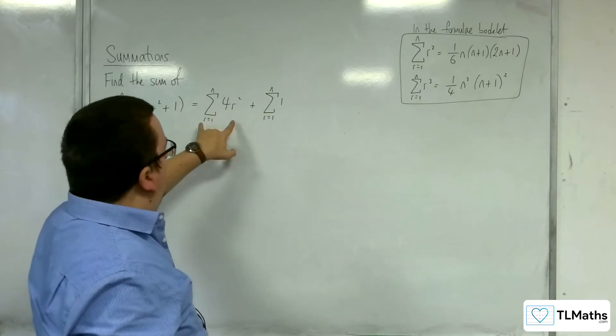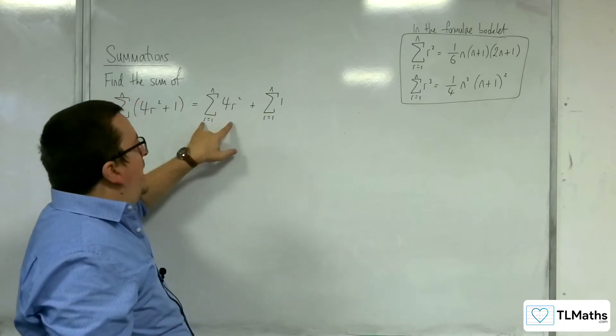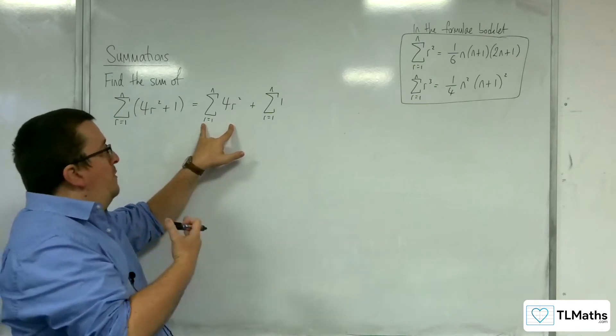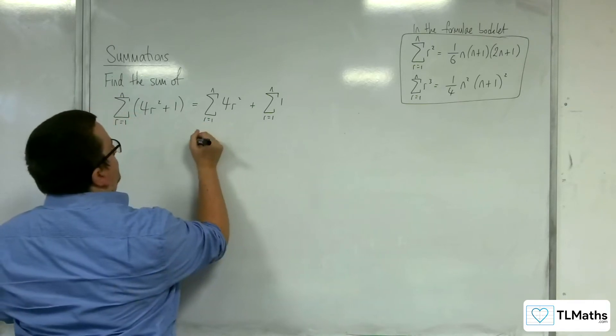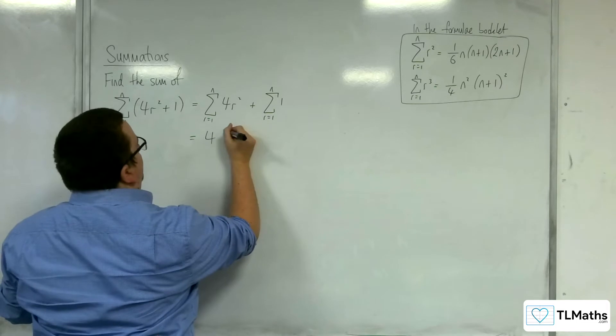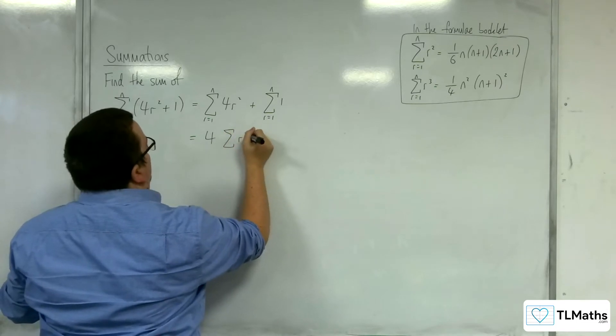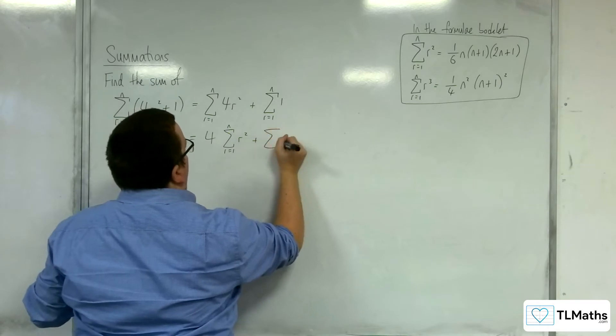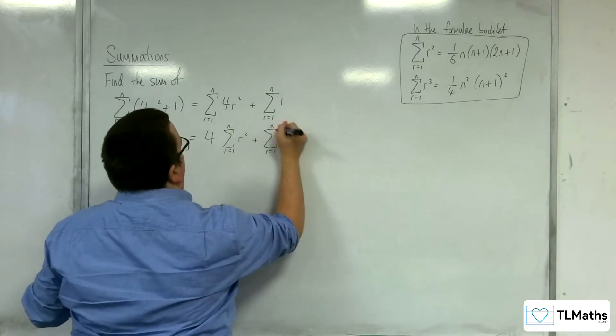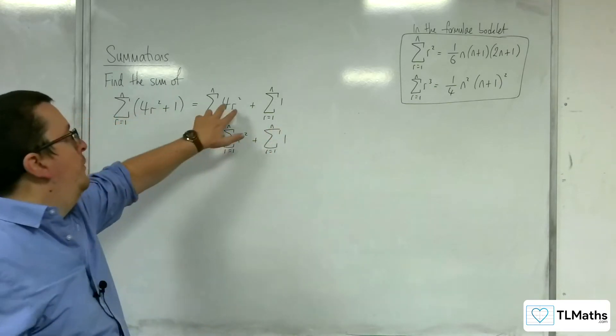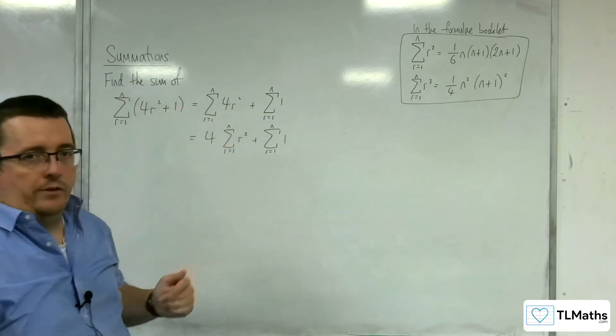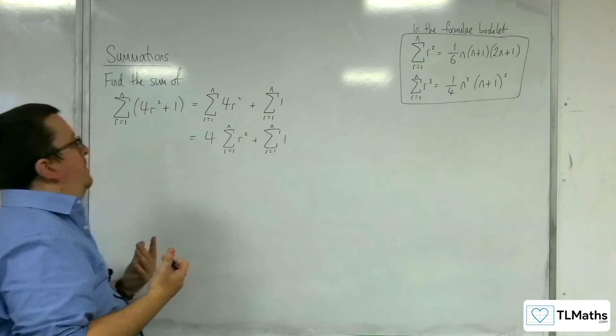Now with this term, we can actually factor the 4 out. We can bring the 4 out to the front of the summation and say it's 4 times the summation of r squared from r is 1 to n plus the summation from r is 1 to n of 1. So if you've got 4r squared or 10r squared, you can bring the 4 or the 10 out. You can bring that factor out, that multiplier out.